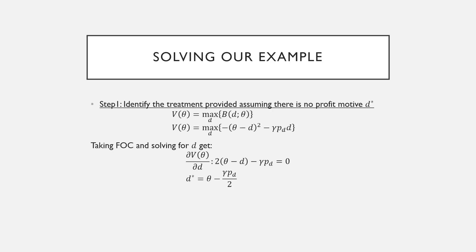Step number one, we're going to identify the treatment provided assuming there is no profit motive. This is assuming our physician is acting as a perfect agent, where he's just maximizing our patient's benefit and we come up with this solution of D star which is a plus θ minus γP_d all over two.